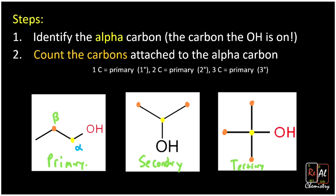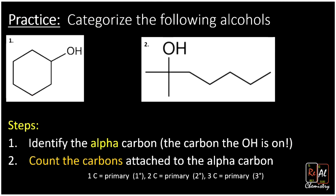Let's go through a few practice problems doing the same exact steps. First, identify the alpha carbon — it's directly connected to the OH right there. Then identify the carbons directly connected to it: one here and one there — so two carbons connected to the alpha carbon. That makes this a secondary alcohol. Anytime you have an alcohol in the middle of an alkane chain, it's always secondary — that's the case here.